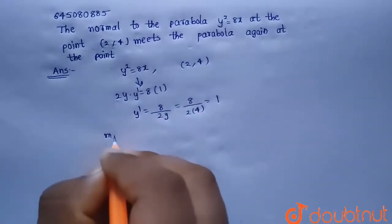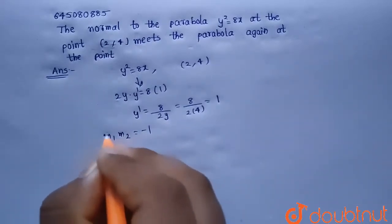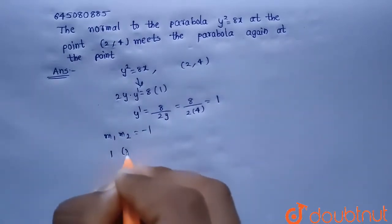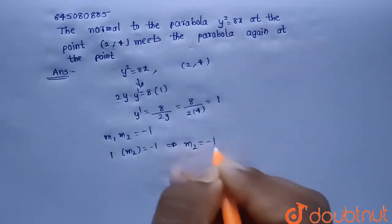We know that m₁·m₂ = -1 when these two lines are perpendicular. So m₁ is the slope of the tangent and m₂ is the slope of the normal. So 1·m₂ = -1. From this, slope of the normal will be m₂ = -1.